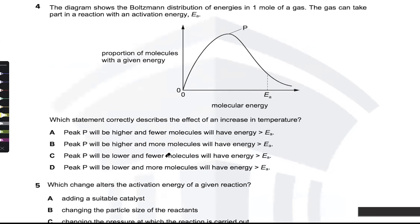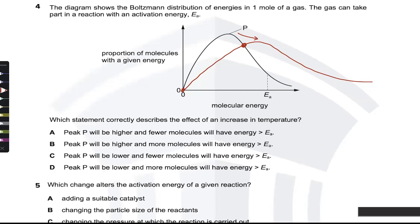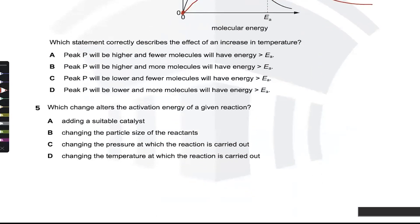The Boltzmann distribution question asks about the effect of increasing temperature. Increasing temperature pushes the curve to the right: total area remains the same, the peak moves to the right and goes lower, and it starts at zero. The new peak P will be lower, so options A and B are eliminated. More molecules will have energy greater than Ea — that is correct — because at higher temperature more particles have higher kinetic energy.